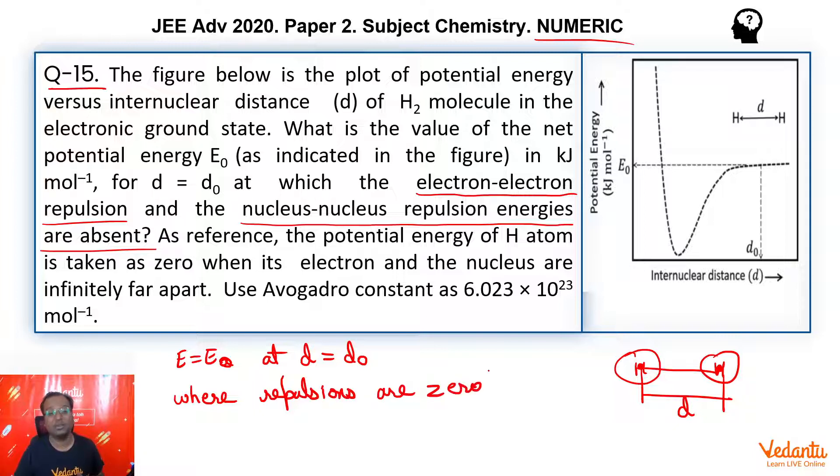So in general, we know that what all two things exist in a molecule. There is repulsion between like charges and there is attraction between opposite charges. So he is saying repulsions are to be considered as zero. So what do we consider? Therefore, we consider only attraction exists. Only attraction exists.